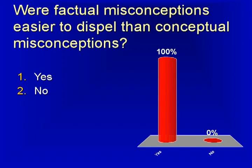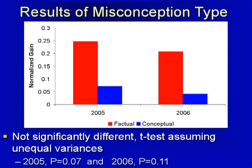So we don't have a significant difference using the student response systems in the discussion questions, but there's indication, there's hope for it. What about the factual misconceptions versus the conceptual questions? The factual questions had much higher gains — in fact, the factual questions had gains that were in the range we start to consider as being important, where we're making significant differences in normalized gains.